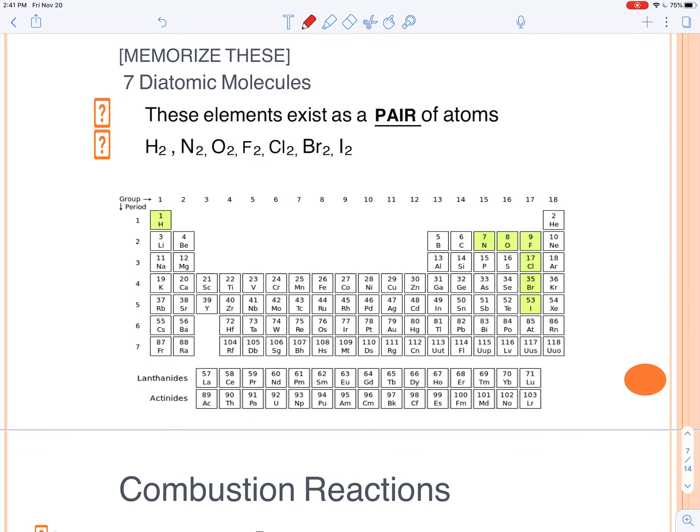Alright, so when we predict products, one thing to remember are the seven diatomic molecules. And so one way to remember it is that on the right side here, they form a number seven. And of course, hydrogen is also included. So don't forget about hydrogen.